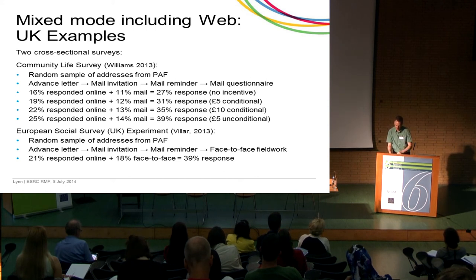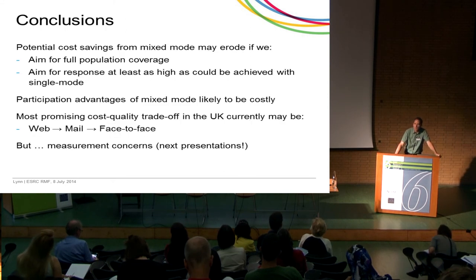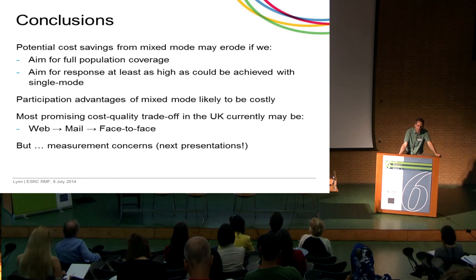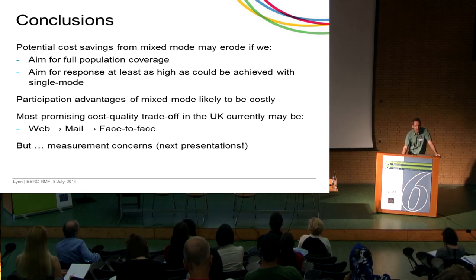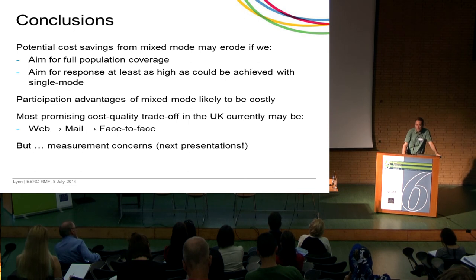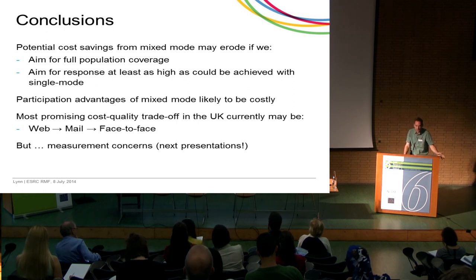In conclusion: if we really want good population coverage, the potential cost savings from using mixed mode rather than single mode may vanish to something very small or even zero. Similarly, if we want response rates as high as the best single-mode survey, the potential for cost savings is currently very small. That may change as we learn to do things better. And even if we could achieve as good coverage, as good participation, and save costs, we still have concerns about differential measurement — which the other presentations will address.